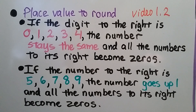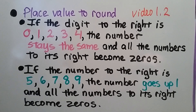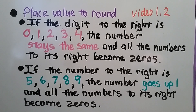We could also estimate differences by using place value to round, which we learned in video 1.2. If the digit to the right is a 0, 1, 2, 3, or 4, the number will stay the same and all the numbers to its right become zeros. And if the number to its right is a 5, 6, 7, 8, or 9, that number will go up 1 and all the numbers to its right will become zeros.